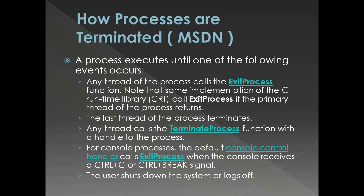These are the ways in which a process is terminated. Any thread of the process calls ExitProcess — this is one way to terminate a process from inside the same process. Also, when the last thread of the process terminates, that is another reason for a process to terminate. For example, in a Hello World application when main returns, the process is terminated — that is a graceful termination.